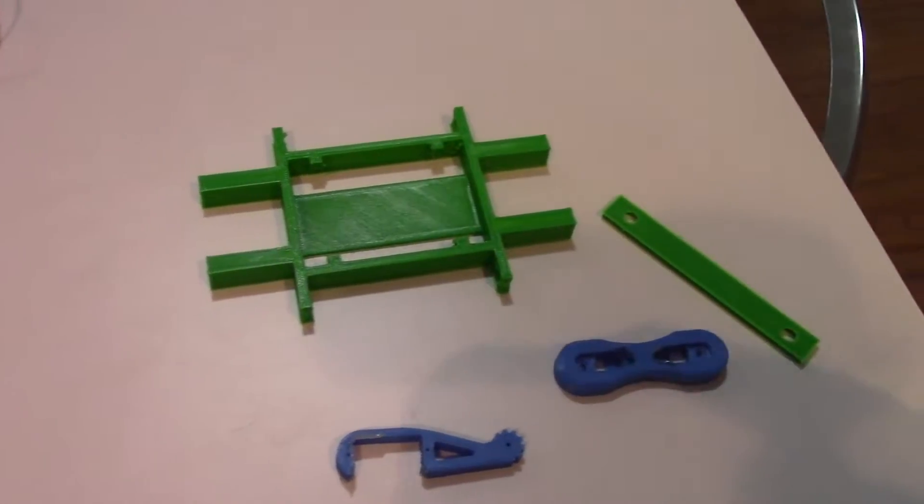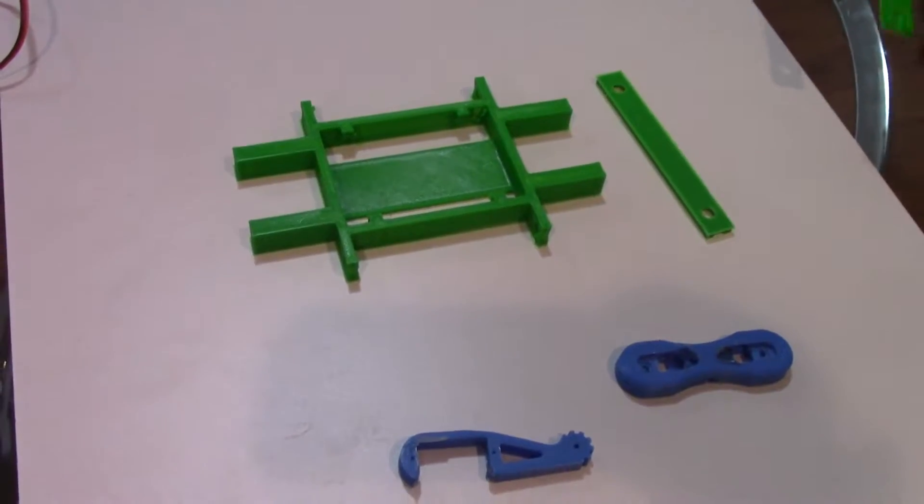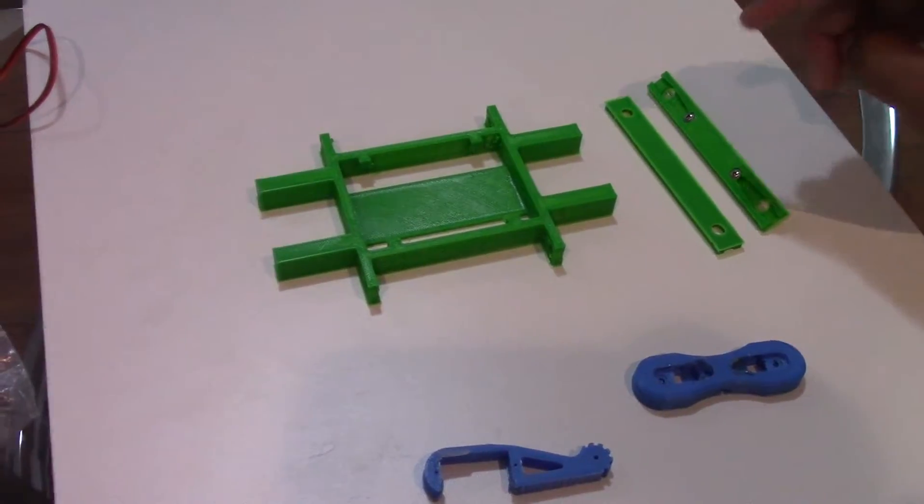So here are the things you will need to print. One of this, this is the body. You will need two of these. I have my second one over here, it has two screws in it, I'll get to that in a second.